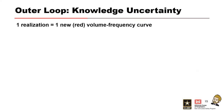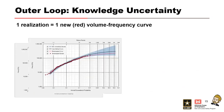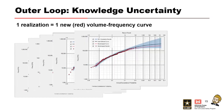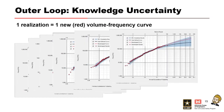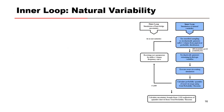In the outer loop of an RFA simulation, a new red sample inflow volume frequency curve is generated for each realization selected in the RFA model, whether you choose 100 realizations or 10,000 realizations. This process simulates knowledge uncertainty in the inflow volume distribution.